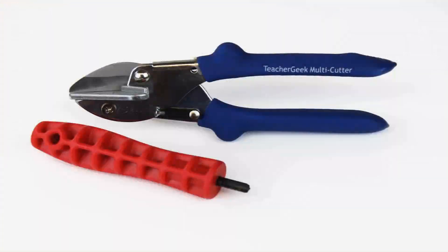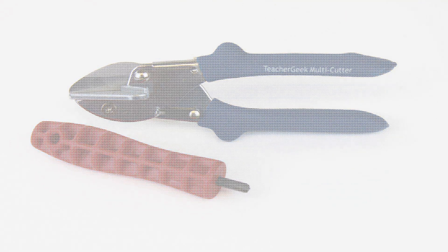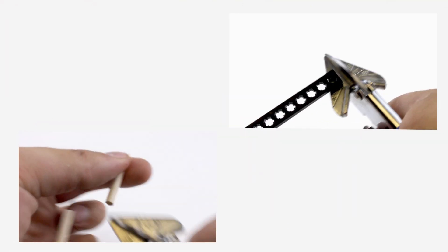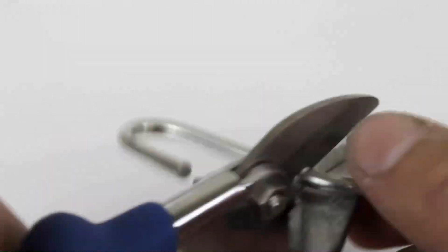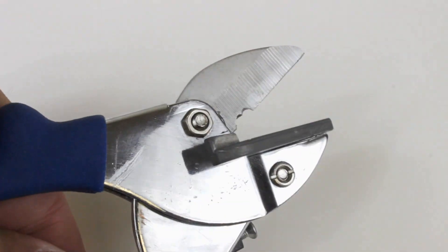The TeacherGeek construction system allows you to build almost any mechanism you can imagine using two simple tools. The dowels and connector strips can be easily cut to size using our TeacherGeek multi-cutter, but don't use the multi-cutter to cut metal because you'll ruin the blade.